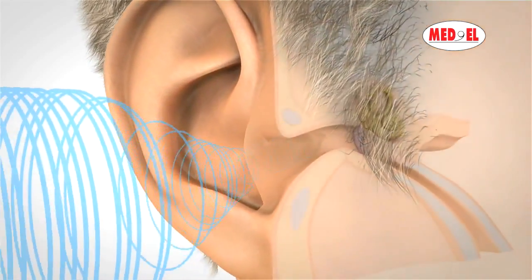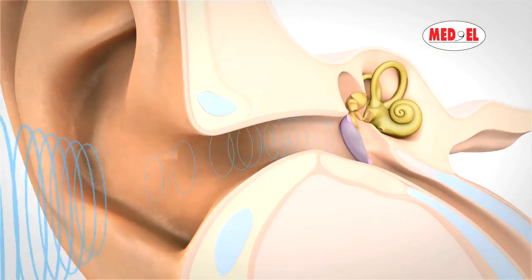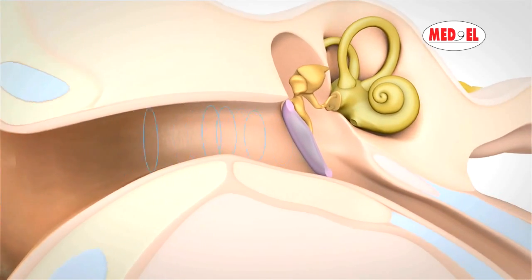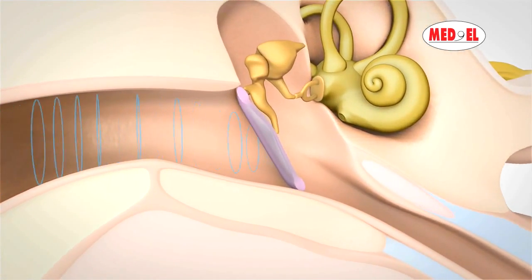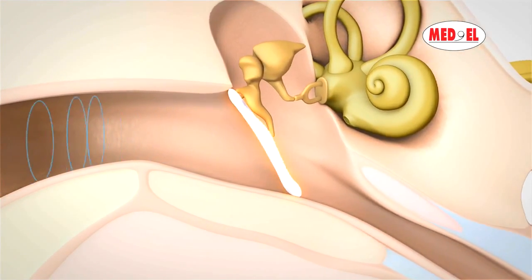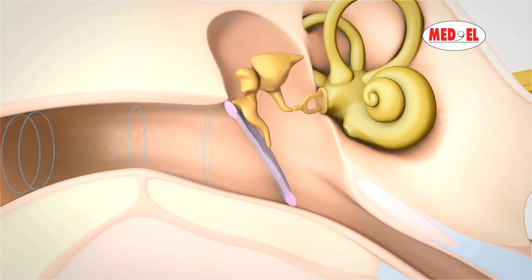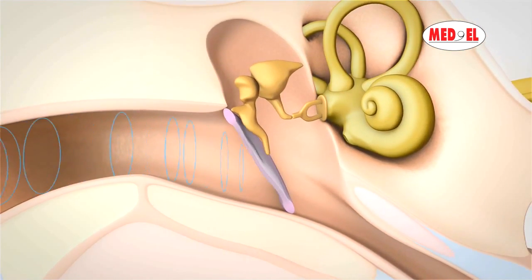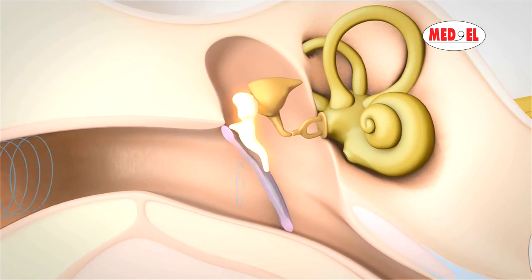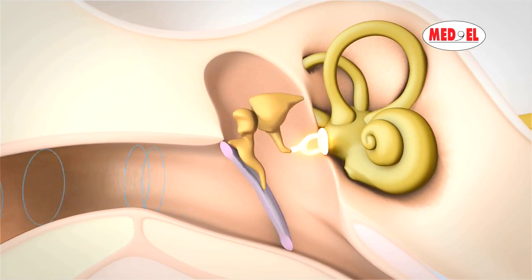Sound enters the ear and is directed through the ear canal where it first reaches the eardrum. As the eardrum begins to vibrate, it sets the ossicular chain in motion. The ossicular chain consists of the hammer, anvil, and the stirrup.